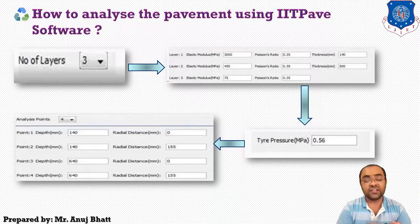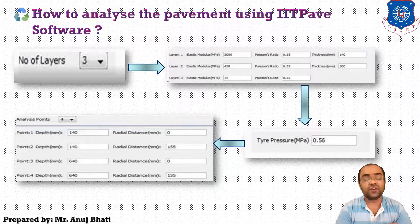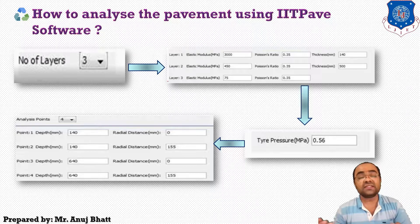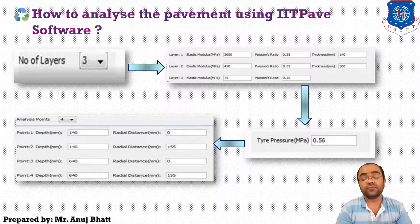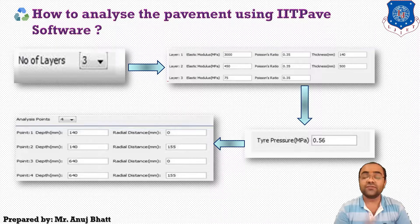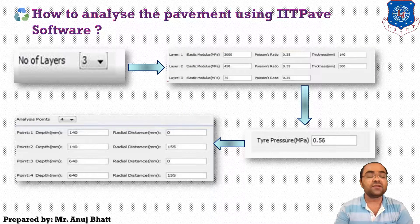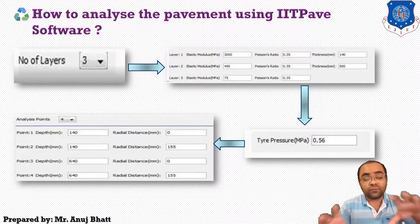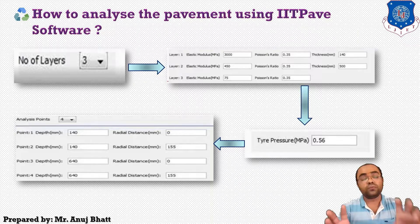The next point has a depth of 140 millimeters, and for that next point the radial distance from the center of the wheel is 155 millimeters and the depth is 140 millimeters. So for these two different points the software will give the stress analysis.